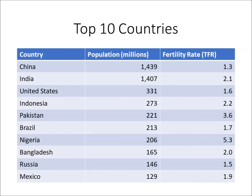Bangladesh is number eight with 165 million people in 2021 and a fertility rate of 2 — slightly below replacement. Russia had a population of 146 million in 2021, probably lower today, and is going into rapid decline as its baby boom generation dies off. Its peak was about 148 million and it has a fertility rate of about 1.5. Mexico is number ten with 129 million and a fertility rate of 1.9 — below replacement, just like Brazil. Latin America has gone from about five children per woman to around two: a profound effect of the birth control pill and modern civilization.